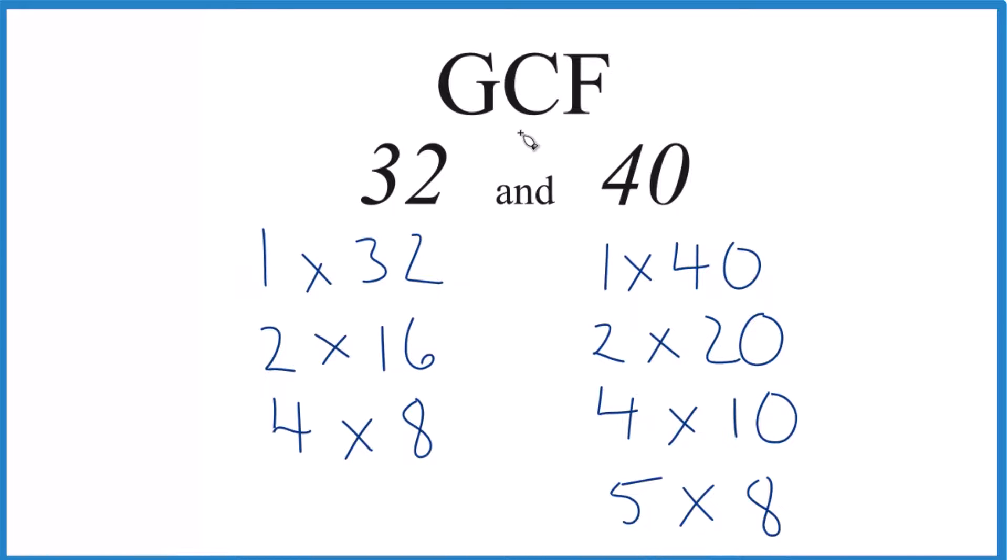So we have our factors. Now we just need to see what's in common. 1 goes into 32 and 40. So does 2, that's common. 4 is common. And then 8, 8 looks like the greatest common factor that goes evenly into 32 and 40.